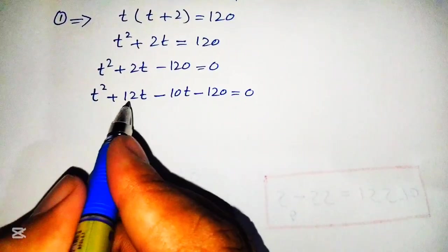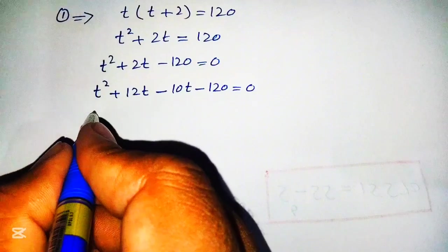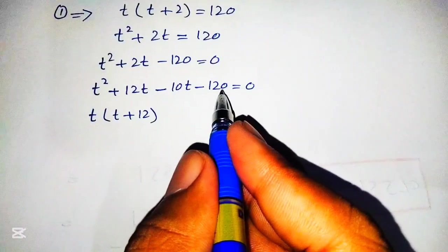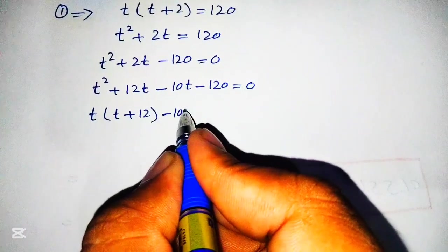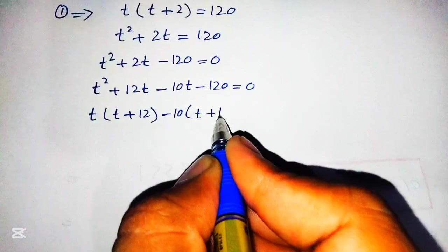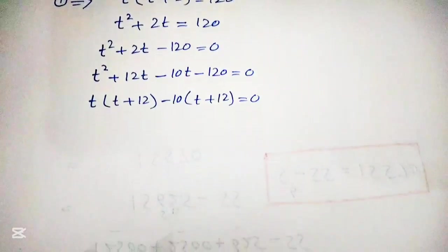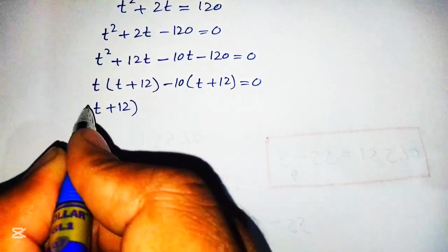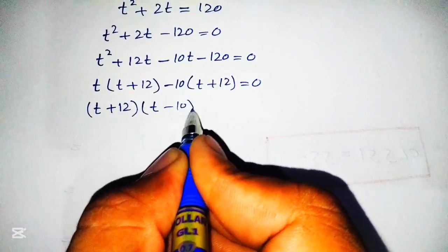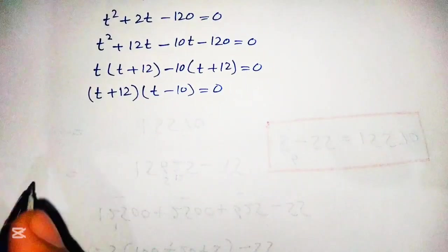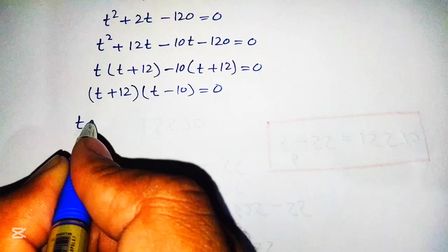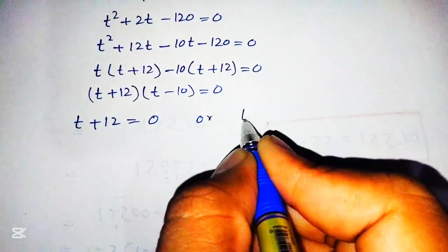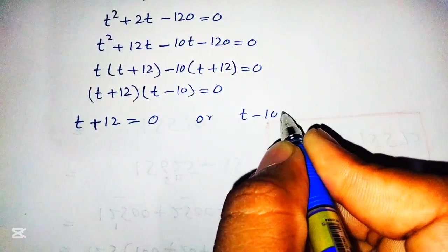We factorize this equation as t² plus 12t minus 10t minus 120 equals 0, where 12 and 10 are factors of 120. Taking t common from the first two terms gives t into t plus 12, and taking minus 10 common from the last two terms gives minus 10 into t plus 12. So we get t plus 12 into t minus 10 equals 0, giving t plus 12 equals 0 or t minus 10 equals 0.